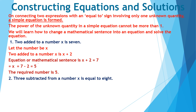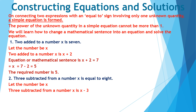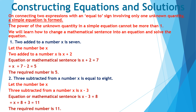3 subtracted from a number x is equal to 8. Let us say that the number is x. 3 subtracted from x is x minus 3, and x minus 3 is equal to 8. So the equation formed is x minus 3 is equal to 8, and on solving, we get the number as equal to 11.